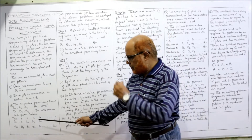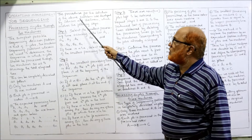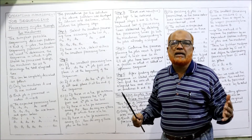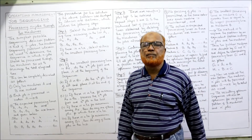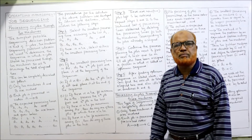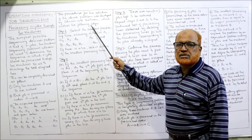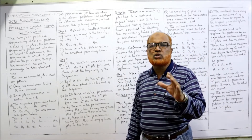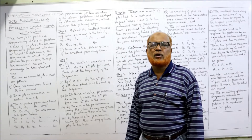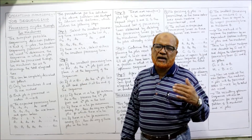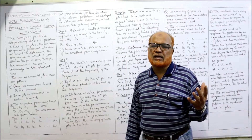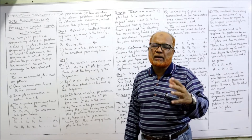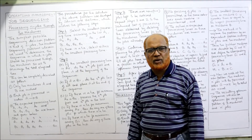The procedure for the solution of this problem was developed by Johnson and Bellman — these are the persons who propounded the method for finding the optimal sequence. It involves the following steps. Once you watch this video, it will be easier to solve problems directly. This concept is very important; watch this video once or twice before going to problems.